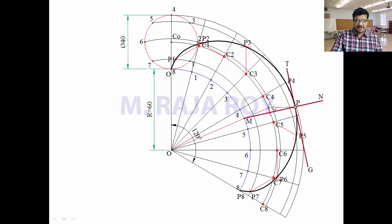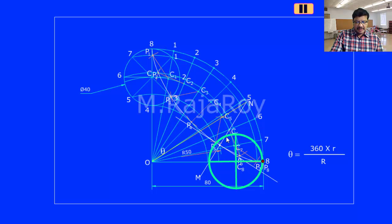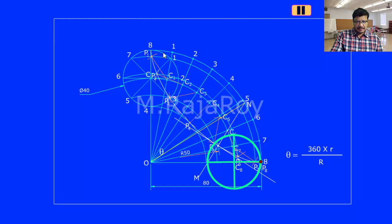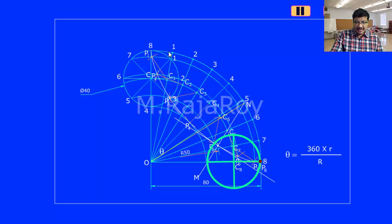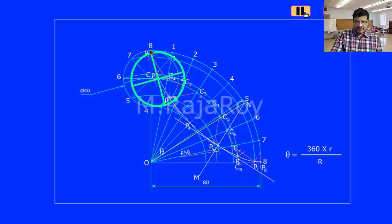In this way you draw the epicycloid and tangent and normal to the epicycloid. Hypocycloid is generated when a circle is rolling inside another circle. This is the directing circle — inside this circle, the rolling circle is rolling. If you observe the animation you can understand one interesting point: the rolling circle rolls in the anticlockwise direction, that is why we give the numbering on the rolling circle in the clockwise direction.